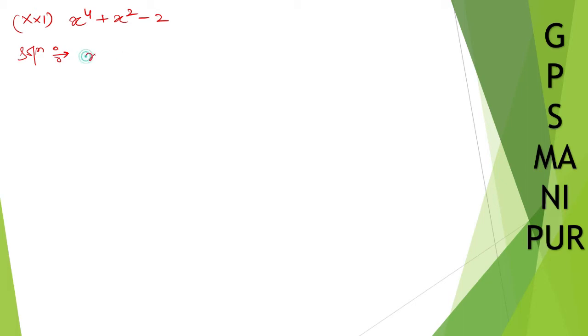Split the middle term. So x to the power 4 plus 2... 1 is a 2, so 2 minus 1 will be 1, right? So x square minus 2. So x to the power 4 plus 2x square minus 1 into x square, it will be x square minus 2.